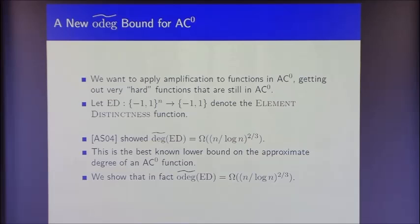Our proof uses Aaronson and Shi's lower bound as a black box. We show how to take any dual witness to the approximate degree of element distinctness and turn it into a dual witness with one-sided error, generically. Aaronson and Shi's proof uses symmetrization and argues about polynomial approximations (primal view); our extension uses only the dual view and uses their result as a black box.